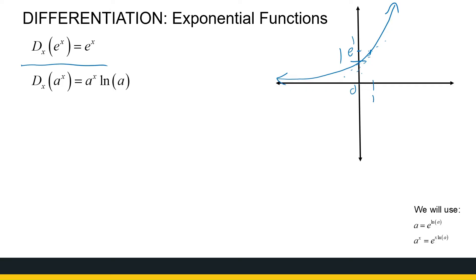A little bit more complex is if we look at the derivative of a to the power x. At the end of this playlist I will show, using the definition of the derivative, why the derivative of e to the power x is e to the power x. But I will use e to the power x to show you why the derivative of a to the power x is a to the power x times ln a. Looking at the bottom right, we're looking at some properties of exponential functions, or of exponents.